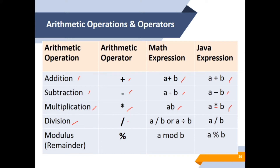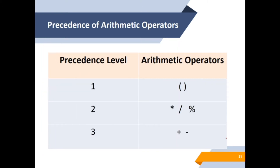For division, we use the slash symbol. For the math expression, we can use A slash B or A divide B, but for the Java expression, we only use A slash B to represent the division operation. The last one is modulus, which refers to the remainder. We use the percent symbol, and in Java expression we write A percent B.